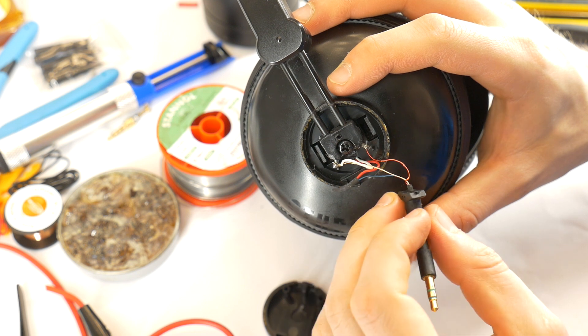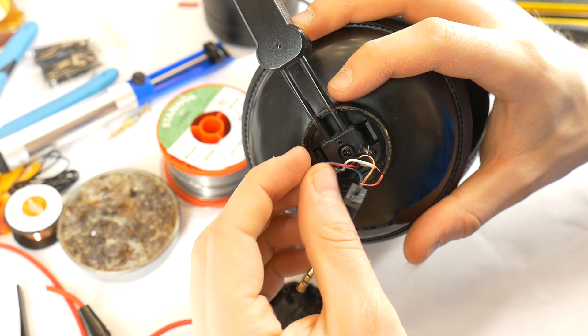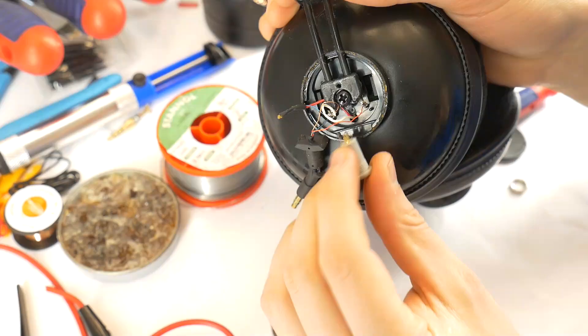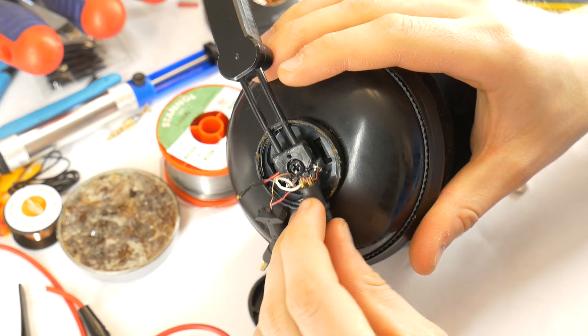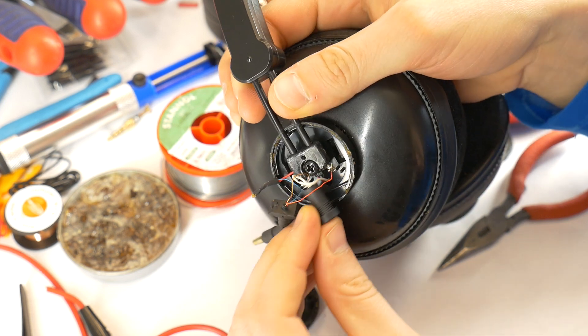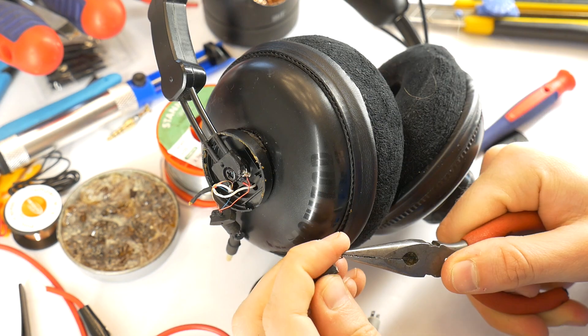In this case there is not much space to install a new socket but in most headphones the situation will be better. The next step is to find the socket that fits best there. It looks like the black socket might fit by bending the contacts.